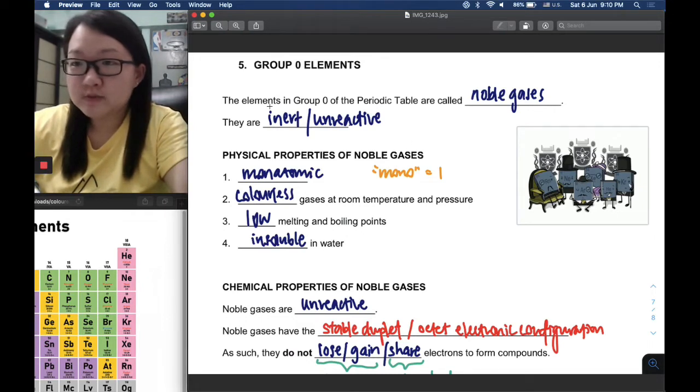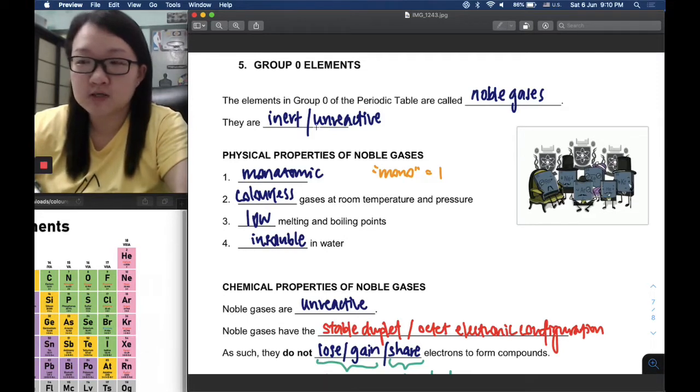The elements in Group 0 of the periodic table are called the noble gases. In terms of reactivity, they are inert. Inert is just another term that means unreactive.